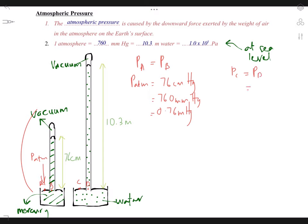So pressure at point C is also atmospheric pressure, so you can write P atm stands for atmospheric pressure. Pressure at point D, and at point D we can see there is a column of water. The height of column of water is 10.3 meter.